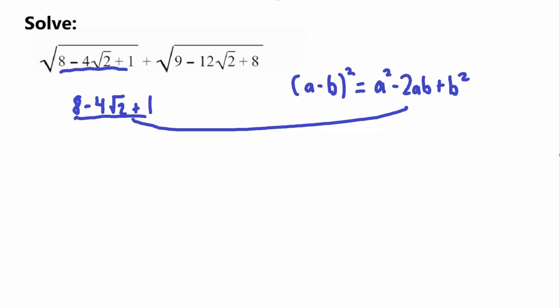The first thing we look for is the a squared term. We already have this broken up into three terms, which is convenient. For the first term, our a is related to 8. Unfortunately, 8 is not a perfect square, so it's not as straightforward. However, whenever you have a value like this, you can write it as the square root of that value, squared — so (√8)². Now we have this written in the form of something squared, meaning a equals square root of 8.